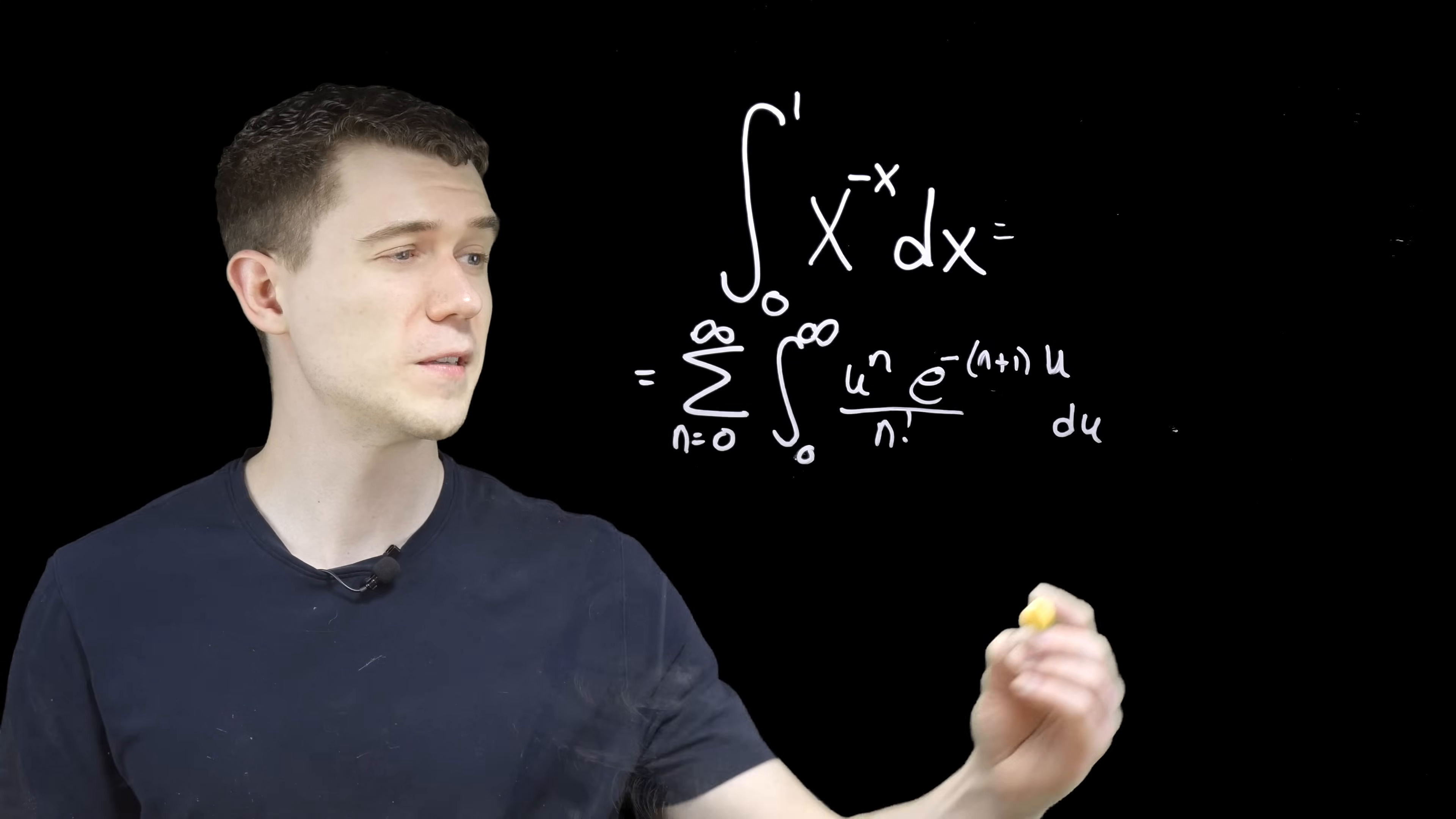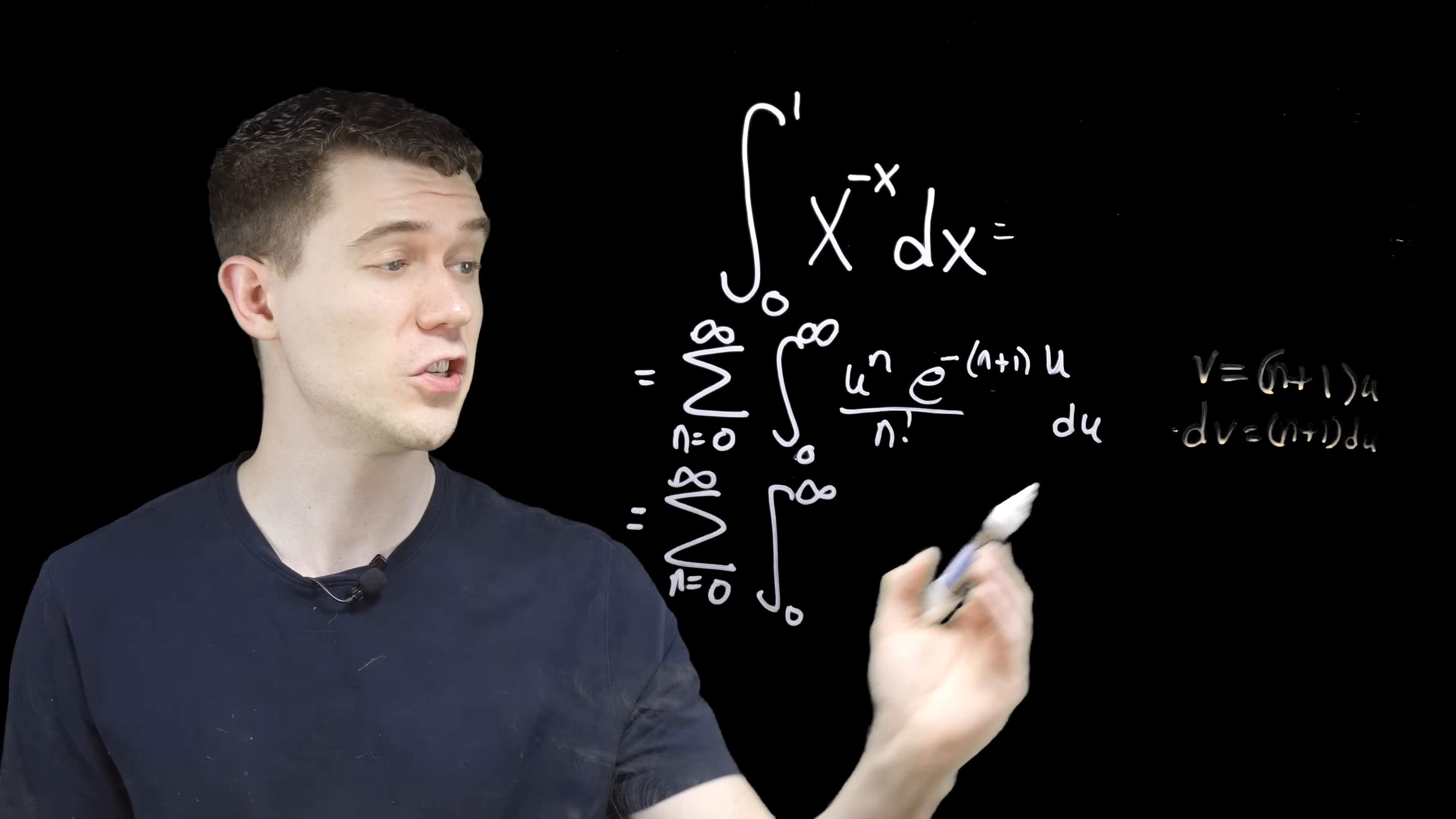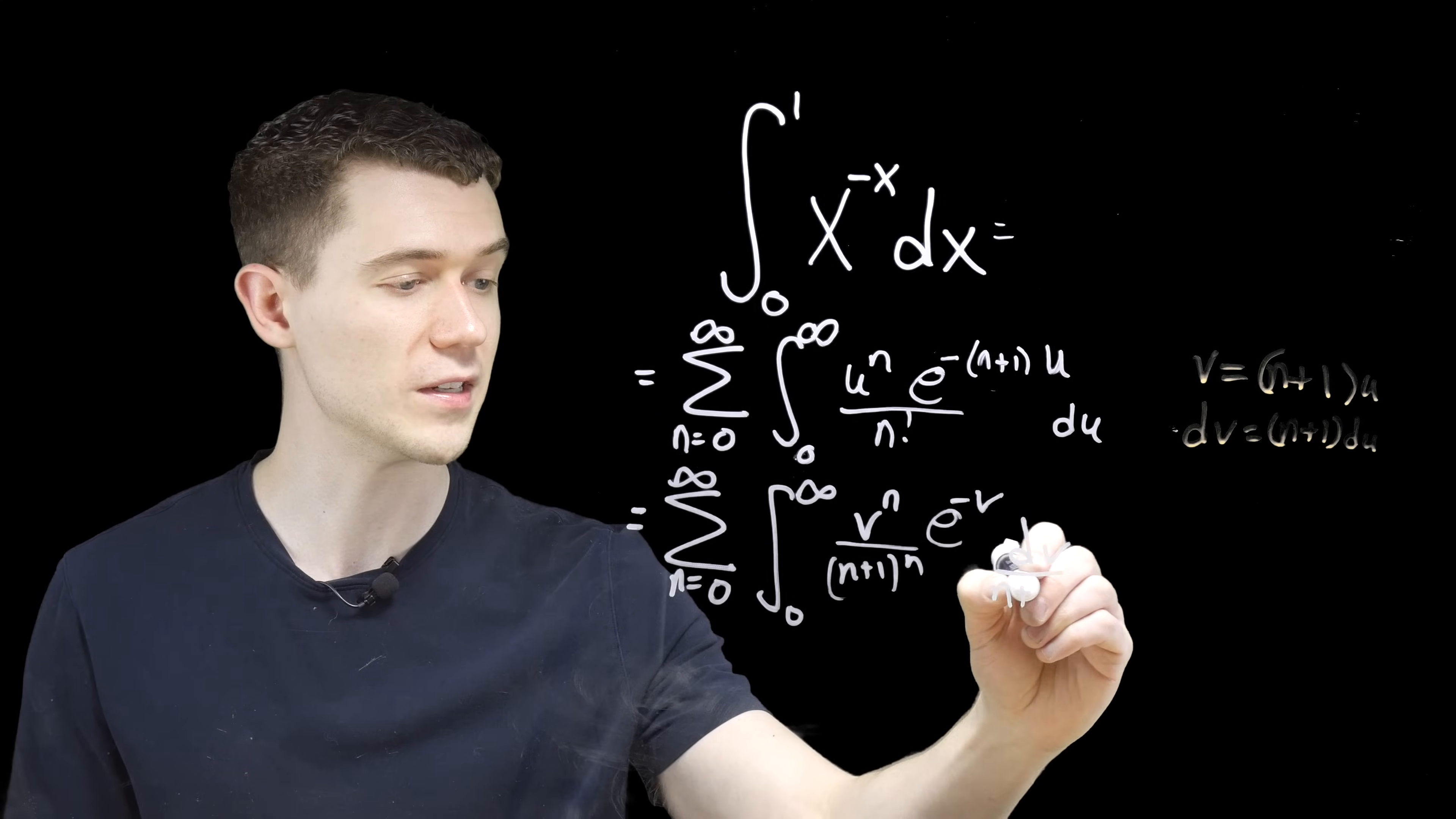There is this slight nuance of the n plus 1. I think let's make another quick substitution. Let's just let v be n plus 1 u, so that dv equals n plus 1 du. The bounds of integration won't change, but what we have now is that u to the n, well, that should change into v over n plus 1 to the n. I'll simply write that as v to the n over n plus 1 all to the n. The e to the minus n plus 1 times u, that'll exactly be e to the minus v. And du, well, that becomes dv over n plus 1.